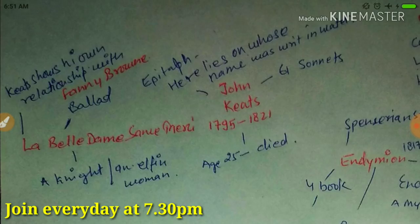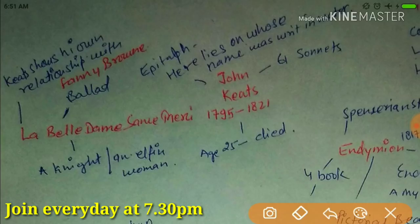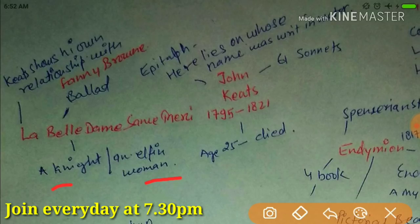He has written a ballad titled 'La Belle Dame Sans Merci.' It was written in 1819 and published in 1820, which describes a knight fatally wounded by an elfin woman. It sets before us the wasting power of love. It lays down that either the hostility of fate or a wrong choice makes love a disaster, not a blessing.